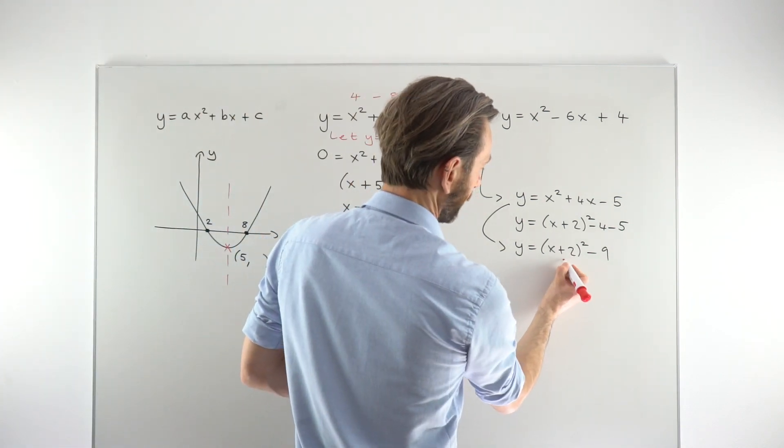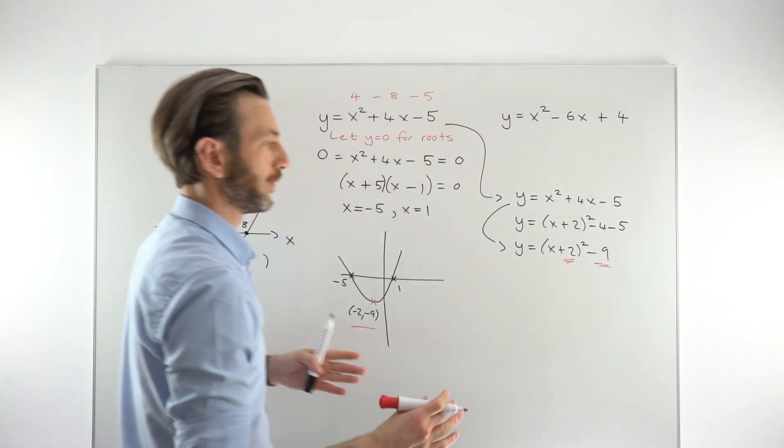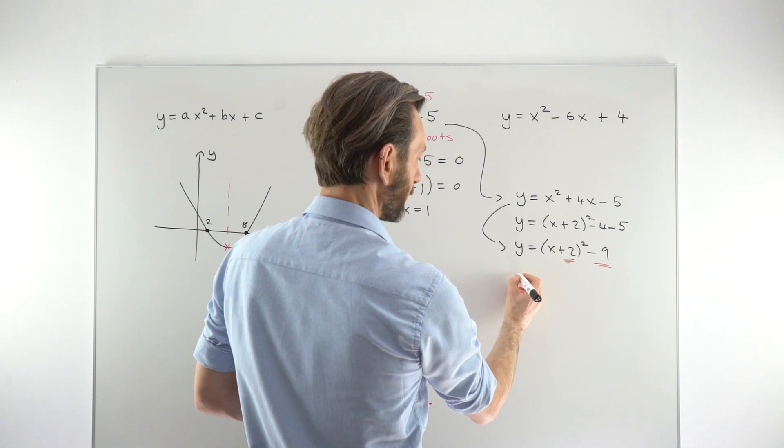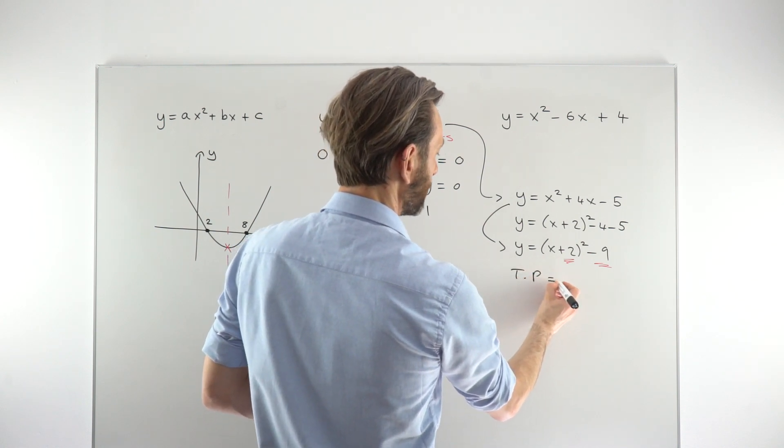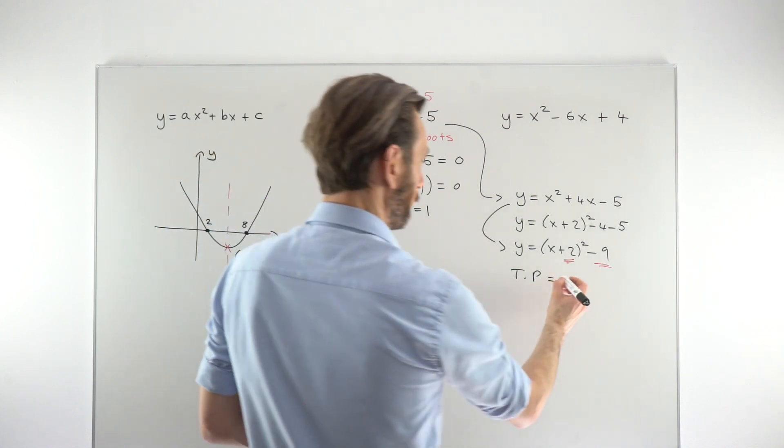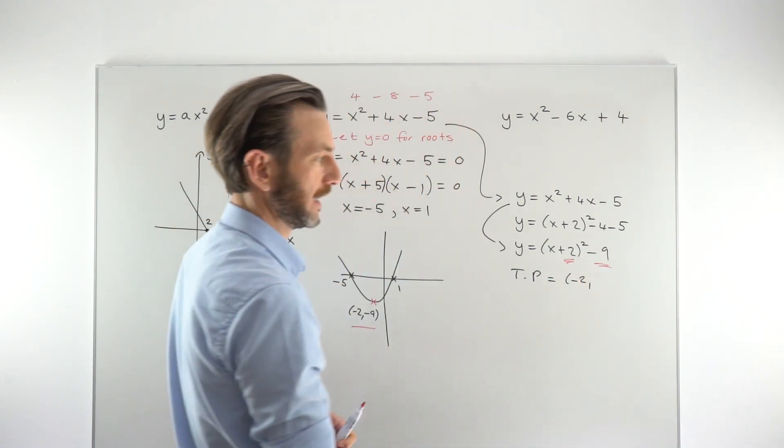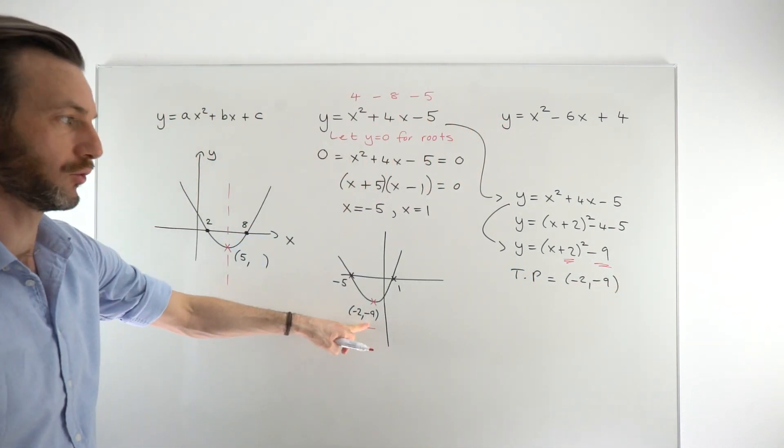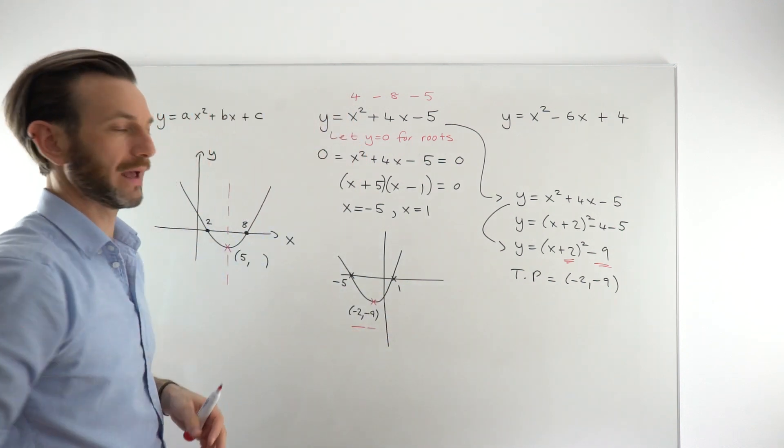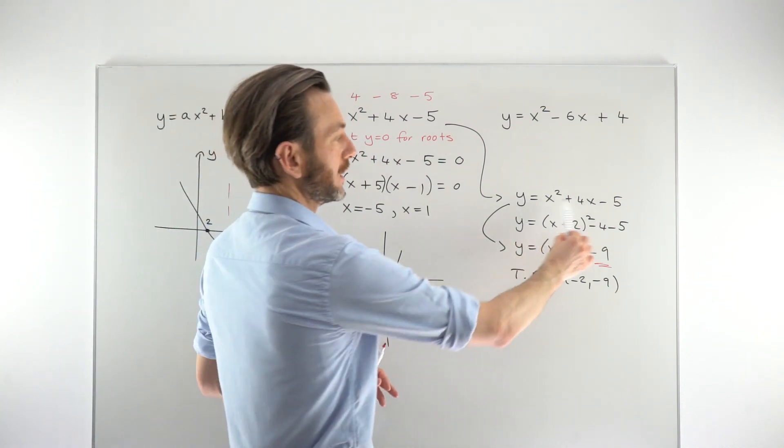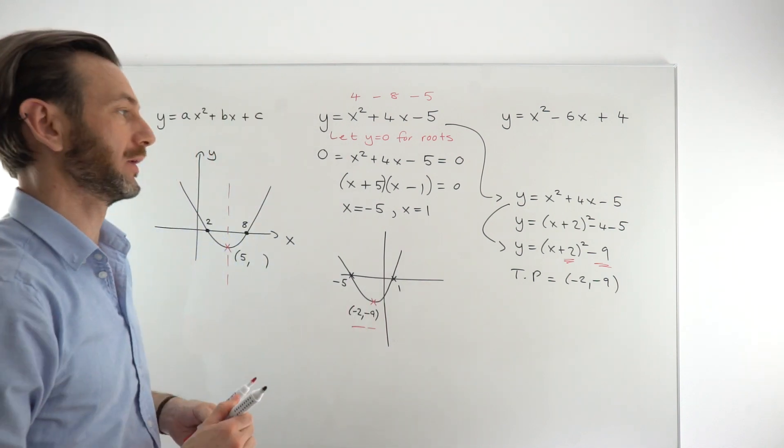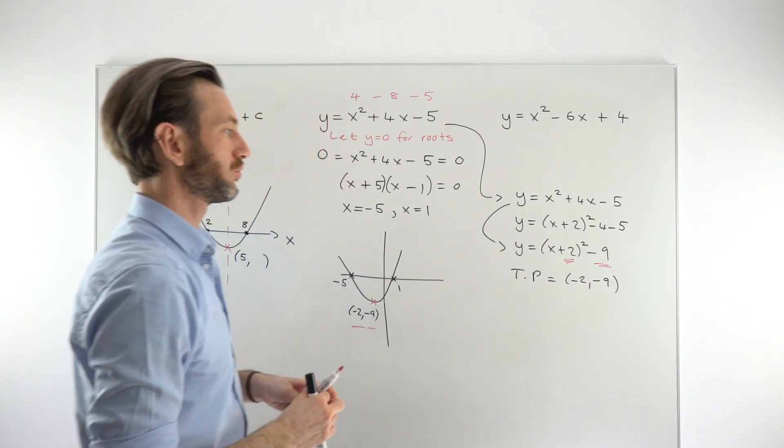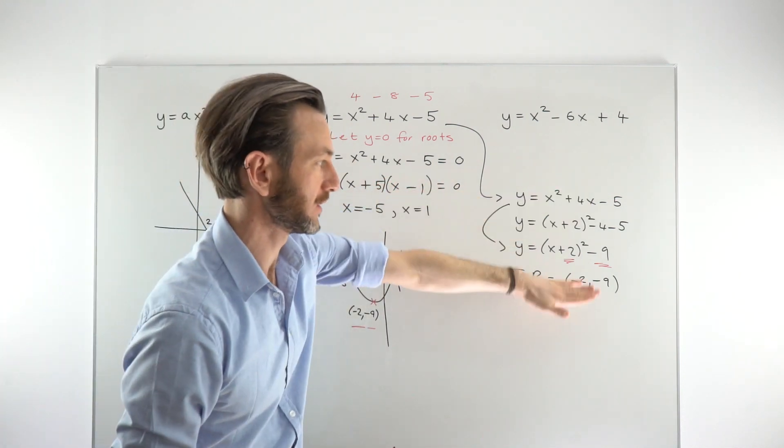So in completed square form, this trinomial becomes this here. So once you've put it in completed square form, all we do is we look basically at these two values, and these values form basically the turning point with the caveat that the one in the bracket, you've got to change the sign on. So if it's a plus 2 in the bracket, you're going to make that a minus 2. So that becomes negative 2. The one outside stays the same basically, minus 9. So minus 2, minus 9, the same as we got by the other method. This is the method we really want to focus on. Ideally, you should be fine with both methods. It would depend on the question.